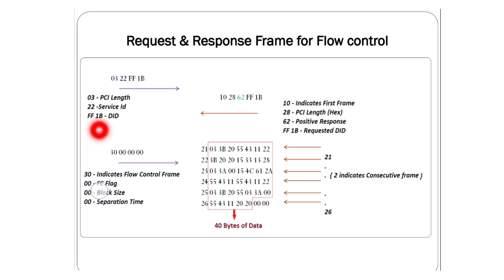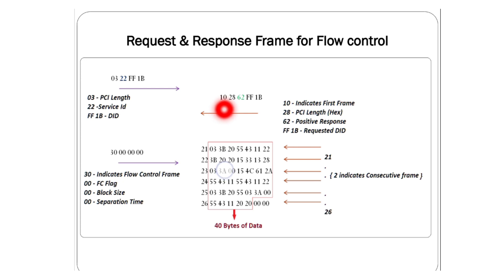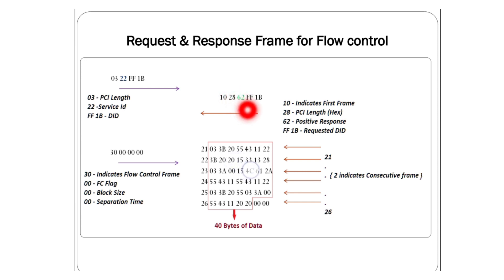For example, if you are requesting a VIN number with DID F180, the VIN number is 17 bytes of data — more than 8 bytes. For that, the ECU will send the hex value of 17 bytes of data, but 10 will be constant to indicate it is a first frame. Then the data length follows in hex, then the positive response and initial data.